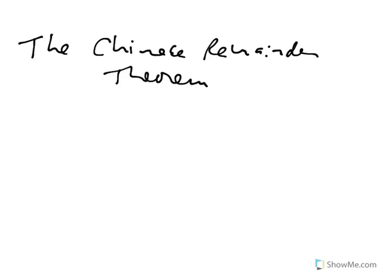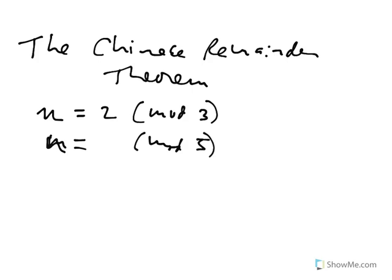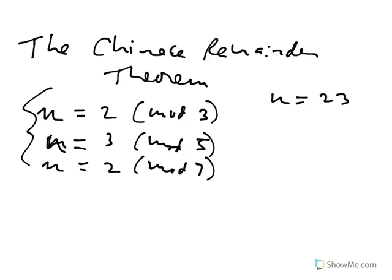This video is about the Chinese Remainder Theorem. I'm looking for a number that when I divide by 3, I get remainder 2. When I divide the same number by 5, I get remainder 3. And when I divide by 7, I get remainder 2. The answer is 23. You can verify that.